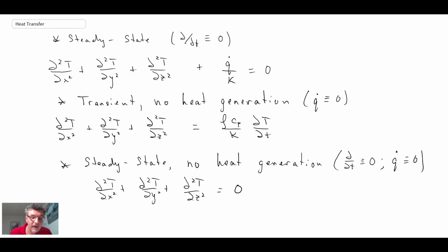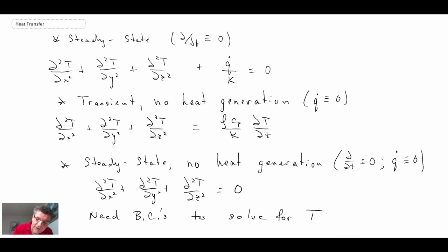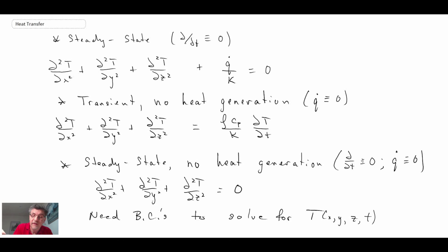As with any differential equation — ordinary or partial — we need boundary conditions in order to solve this. Boundary conditions are required to solve for the temperature distribution T(x, y, z, t). We take this equation, couple it with boundary conditions, and then we can determine what's going on inside. This can be done numerically or analytically for very simple problems. In the next segment, we'll look at the boundary conditions that apply to the heat diffusion equation, which you can use to determine the temperature distribution within an object undergoing conduction.